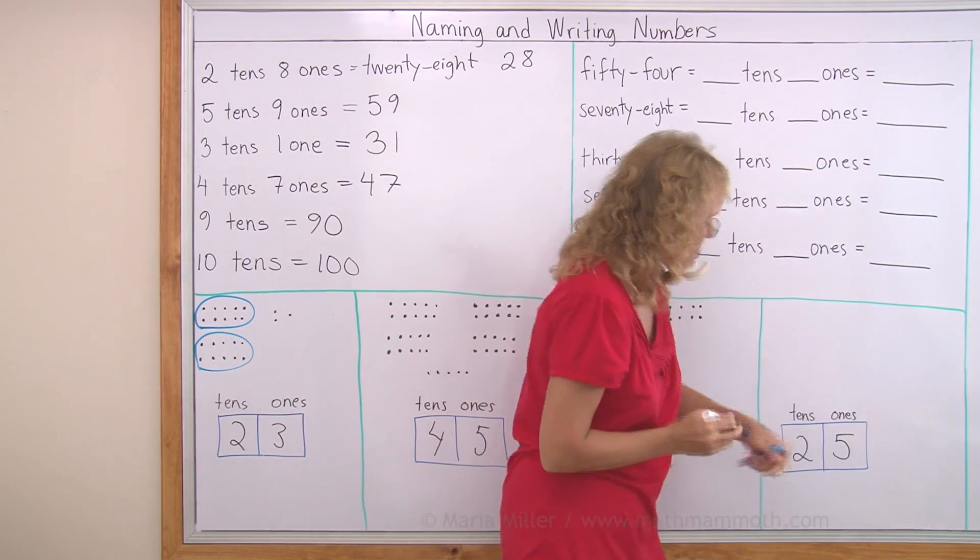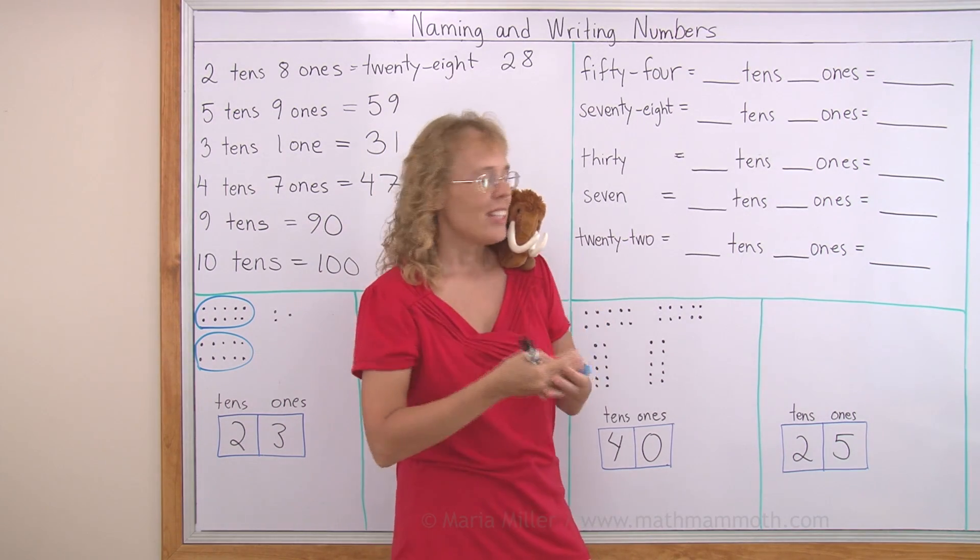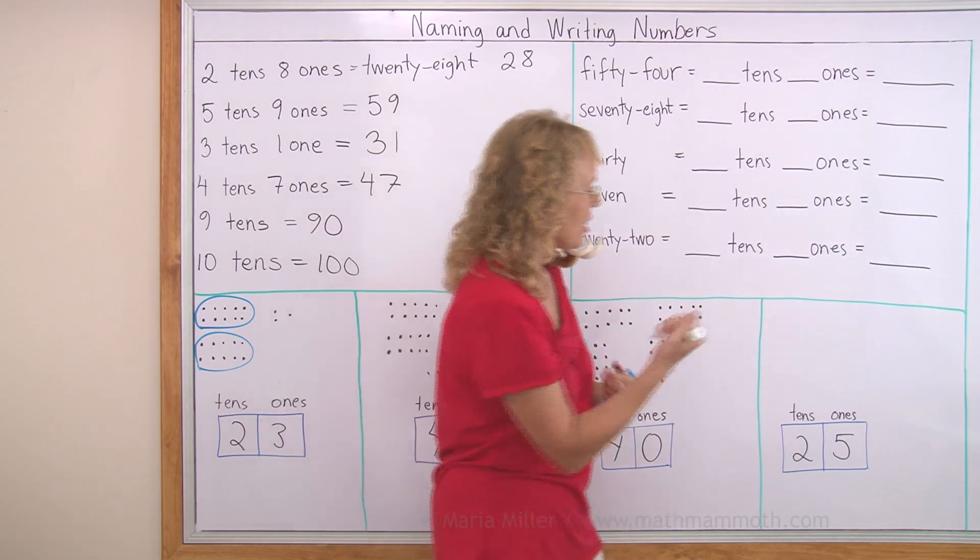What number is this? 2 tens, 5 ones. 2 tens was 20, right? 25. Let's draw dots for it.